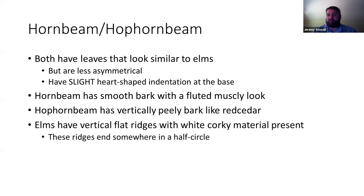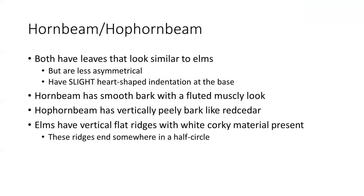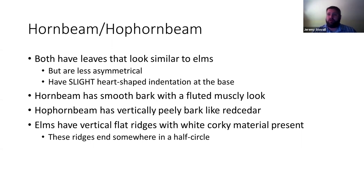Hop hornbeam has hop-like clusters of deflated New England football-shaped fruits. Hornbeam looks like it has a tiny little maple leaf folded around a little tiny nut. A student asks about fruit photos on the quiz. Multiple photos are provided on almost everything — the only time you get one picture is when it's obvious with one picture. If I put up an elm, hornbeam, or hop hornbeam leaf alone, I know that's not enough to ID it, so you'll also get a twig, bark, or something else that makes it identifiable to species.